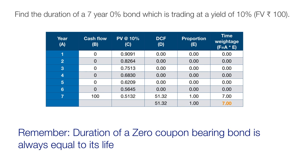By now you should understand the logic behind this. In a coupon-bearing bond, the investor receives coupons which are reinvested and earn additional income, allowing the investor to achieve the targeted cash flow much earlier than the bond's life. But in a zero-coupon bond, there are no intermediate cash flows to invest, so the investor must hold the bond for the full seven years to attain the targeted cash flow.